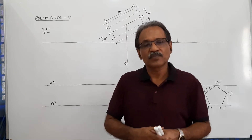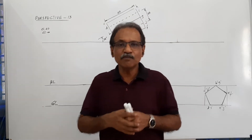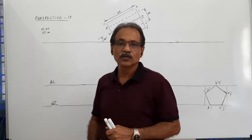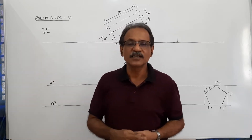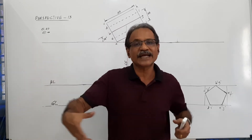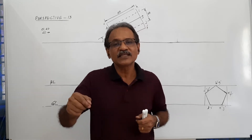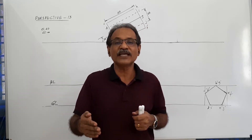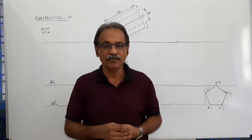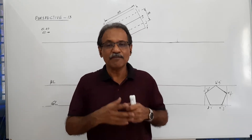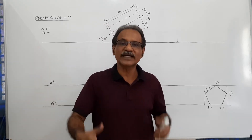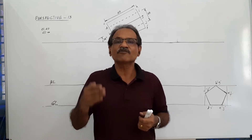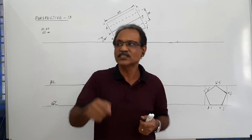A pentagonal prism, 25 mm side, 60 mm axis, is lying on the ground on a rectangular face with a corner of the front pentagonal face touching the picture plane.